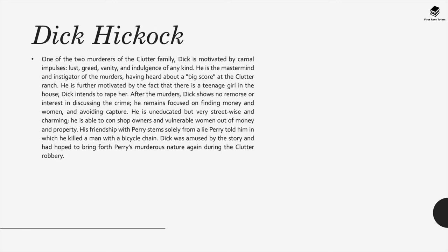Dick Hickok, one of the two murderers of the Clutter family, is motivated by carnal impulses — lust, greed, vanity, and indulgence of any kind. He is the mastermind and instigator of the murders, having heard about a big score at the Clutter ranch. He is further motivated by the fact that there's a teenage girl in the house — Dick intends to rape her. After the murders, Dick shows no remorse or interest in discussing the crime, remaining focused on finding money and women and avoiding capture. He is able to con shop owners and vulnerable women out of money and property. His friendship with Perry stems solely from a lie Perry told him in which he killed a man with a bicycle chain — Dick had hoped to bring forth Perry's murderous nature again during the Clutter robbery.